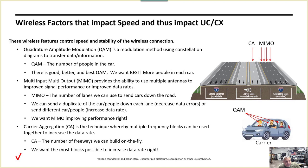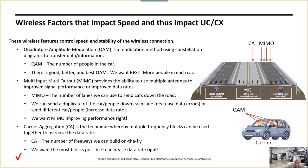Wireless factors impact speed and thus impact UC and CX — they impact stability. Speed is part of stability. I'm going to tech out a little bit here, but I'll bring it back to an analogy. The wireless features that control speed and stability of wireless connections — there are just a few we need to understand a little about. First, there's quadrature amplitude modulation.